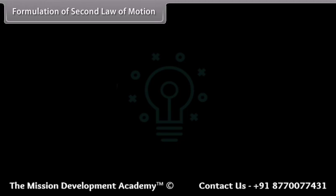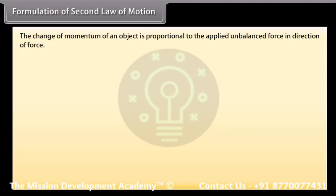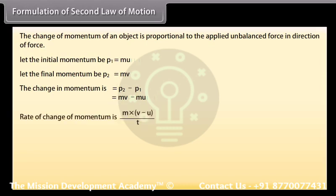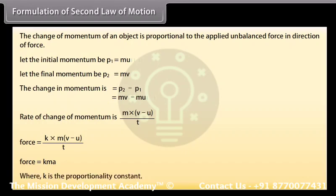Formulation of the second law of motion: the change of momentum of an object is proportional to the applied unbalanced force in the direction of force. Let the initial momentum be P1 equals mu, and the final momentum be P2 equals mv. The change in momentum is P2 minus P1 equals mv minus mu. The rate of change of momentum is m(v minus u) divided by t. Force equals KmA, where K is the proportionality constant.